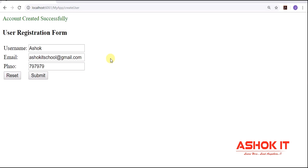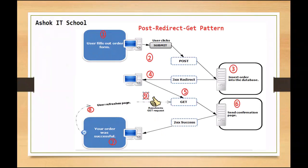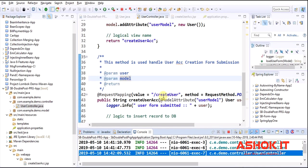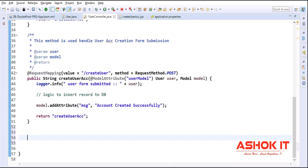Now we need to resolve this problem using the Post-Redirect-Get pattern. Once the user submits the form, the POST request goes to the server — but instead of returning the response directly, we redirect the user to a GET request method which displays the success message. Even if the user refreshes, the GET request will be submitted, not the POST request. Let me implement this PRG pattern in the project.